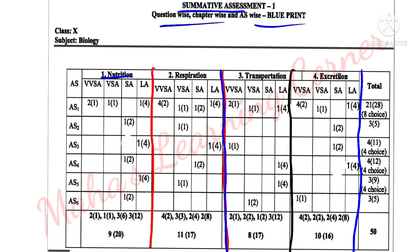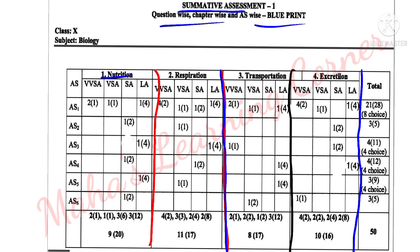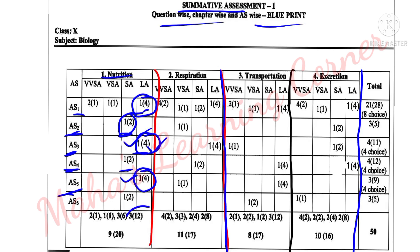For the 1st lesson — Nutrition — the half-mark questions carry 1 mark under AS1. Very short answer questions include 1-mark questions under AS1, and a 2-mark short answer question under AS1. There is 1 SA question under AS2 for 2 marks, and questions mapped to AS3, AS4, and AS5 as well.